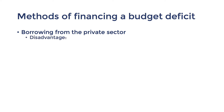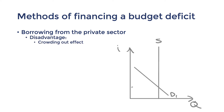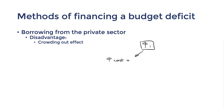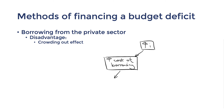A disadvantage of this method is that it could cause the crowding out effect. When the government opts to borrow from the private sector, there is increasing demand for existing borrowable funds, leading to higher interest rates. With the cost of borrowing increased, investments may decrease — in other words, private sector investments get crowded out due to the public sector's borrowing.